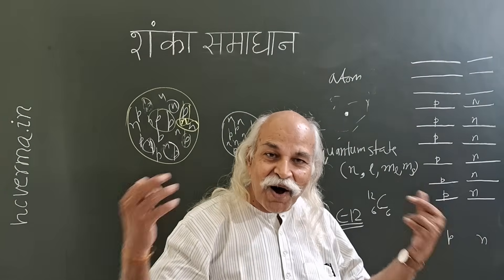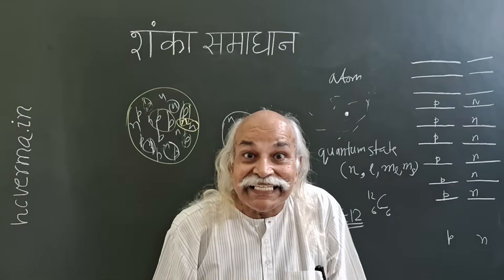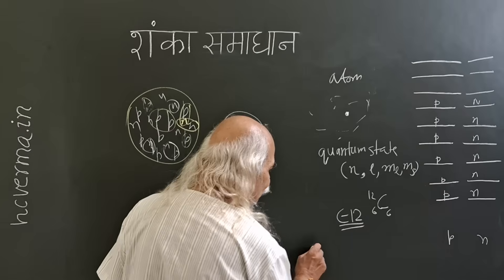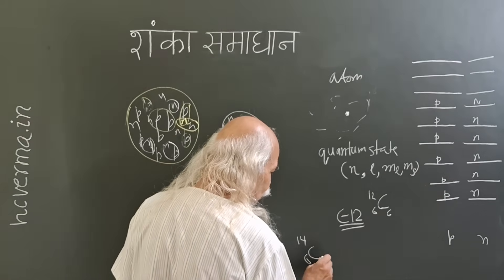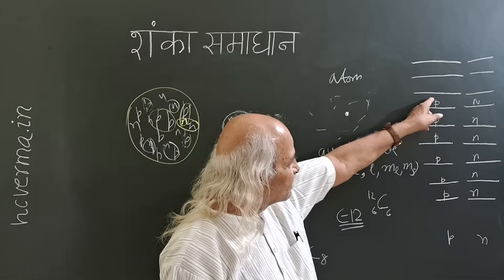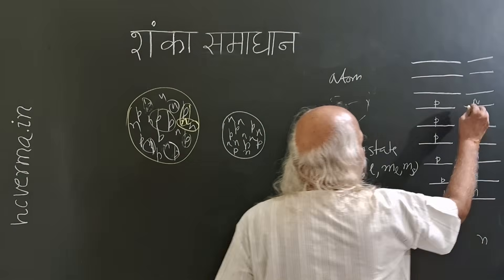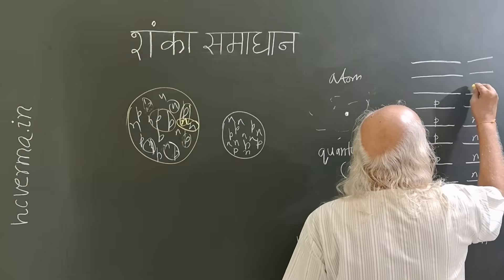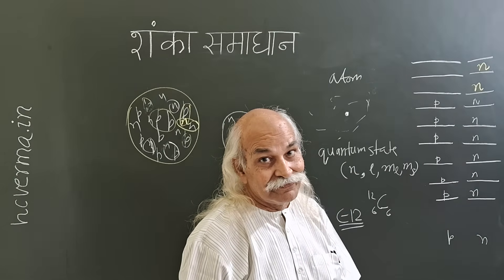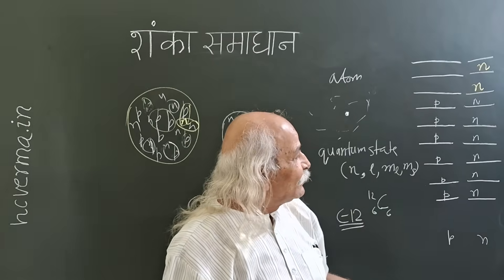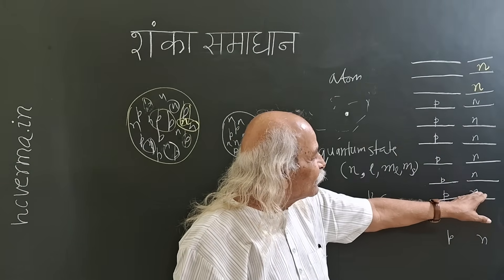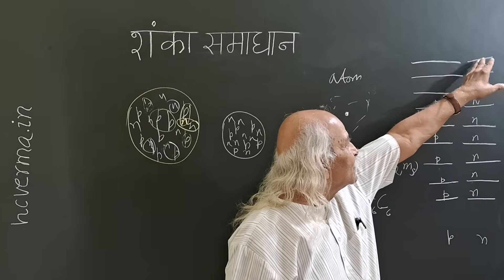Now suppose we have carbon-14, meaning 2 more neutrons — 6 protons and 8 neutrons. The 6 protons fill the same states as before. But 8 neutrons: the first 6 fill the same lower states, and the extra 2 neutrons must go into the next higher energy states — one here and one here. Now look at the total energy: it is the sum of all the proton state energies plus all the neutron state energies up to this higher level.